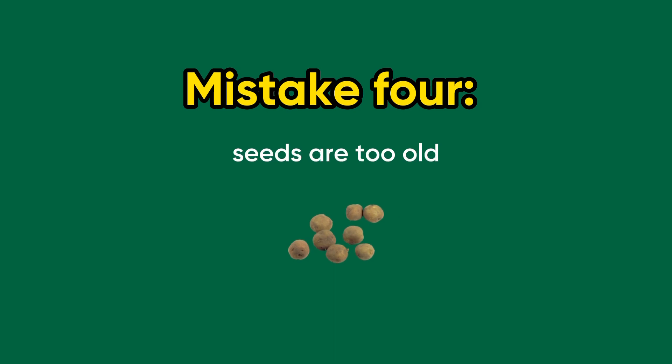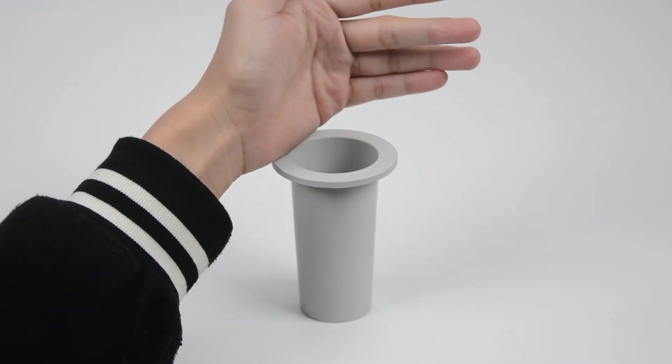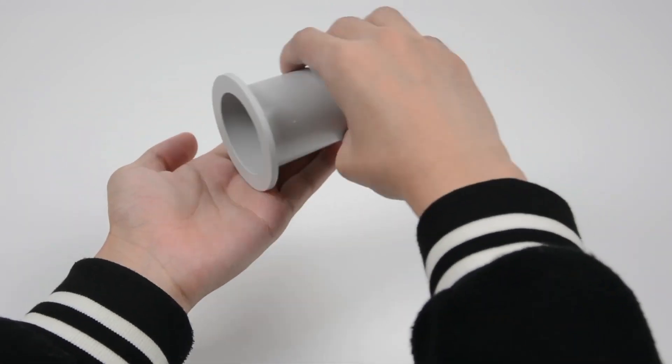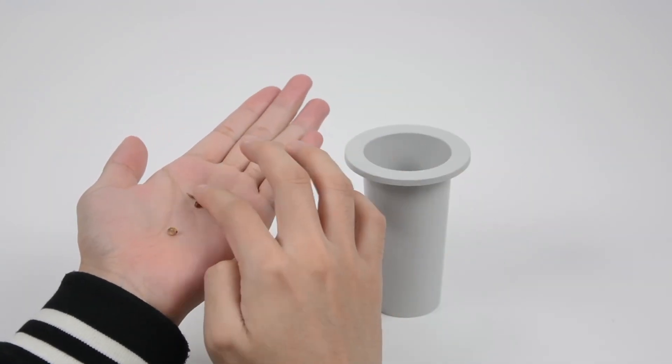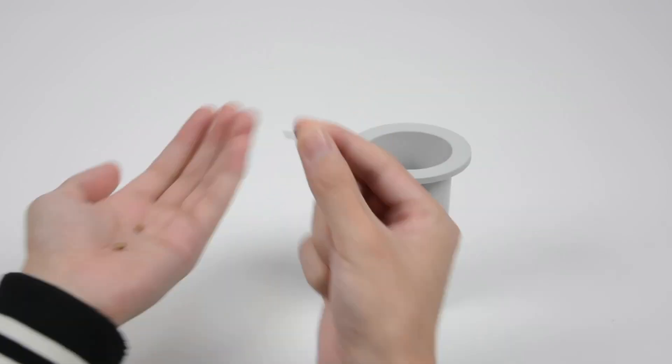Number 4. Seeds are too old. If your seeds are stored at room temperature, like inside a cupboard or a shop store for too long, they will age and lose viability. To test your seeds, place them in water and if they don't sprout after 4 days, they could be too old.